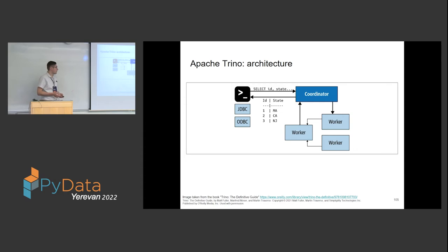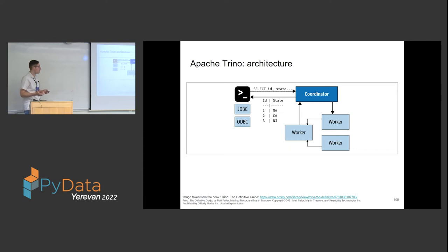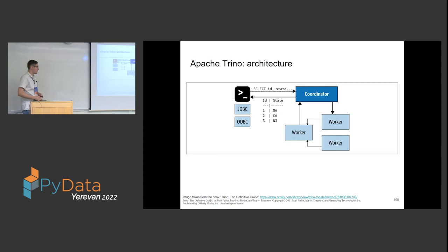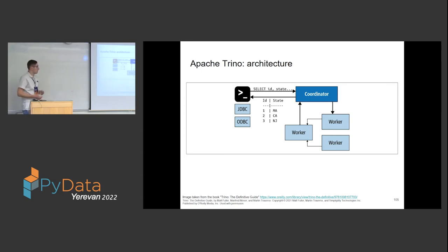Quickly about the architecture: it's very similar to Spark — a one-coordinator, multiple-workers architecture. When the client makes a request, which is just a string with an SQL statement, the coordinator triggers multiple workers which then actually read and transform the data, potentially with multiple stages and shuffles. They either return it directly via the coordinator to the client, or save it somewhere to be read afterwards.